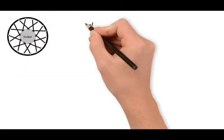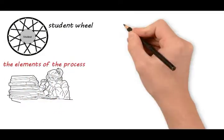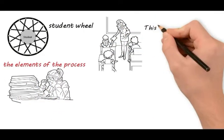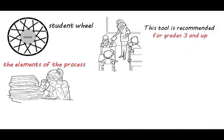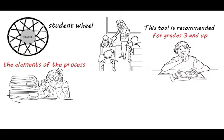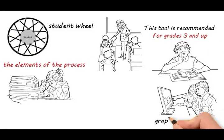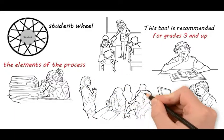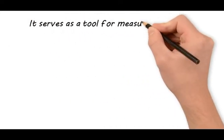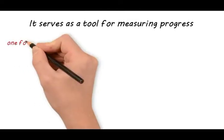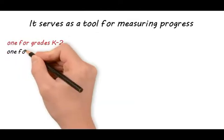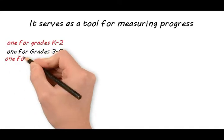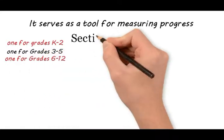The Student Wheel is a succinct version of the books. It presents the elements of the process and tips for tackling writing on tests. This tool is recommended for grades 3 and up. The workbooks present rubrics, graphic organizers, and opportunities for differentiation among learners. It serves as a tool for measuring progress. There is one for grades K-2, one for grades 3-5, and one for grades 6-12.